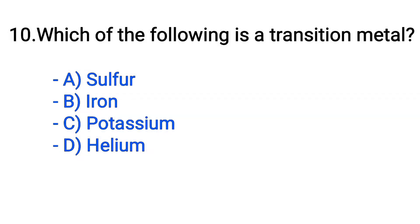Question number 10. Which of the following is a transition metal? Option A: Sulphur. B: Iron. C: Potassium. D: Helium. The correct answer is option B, Iron.